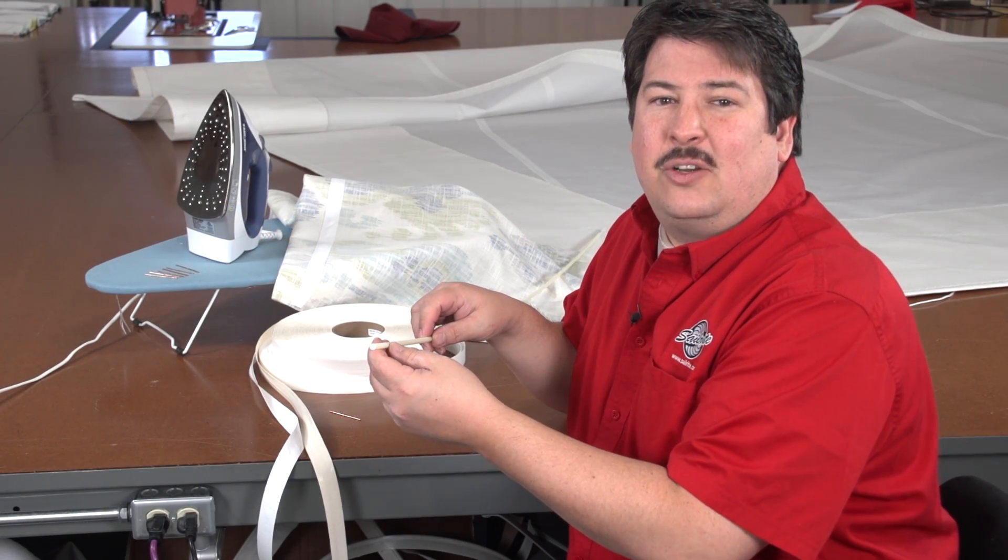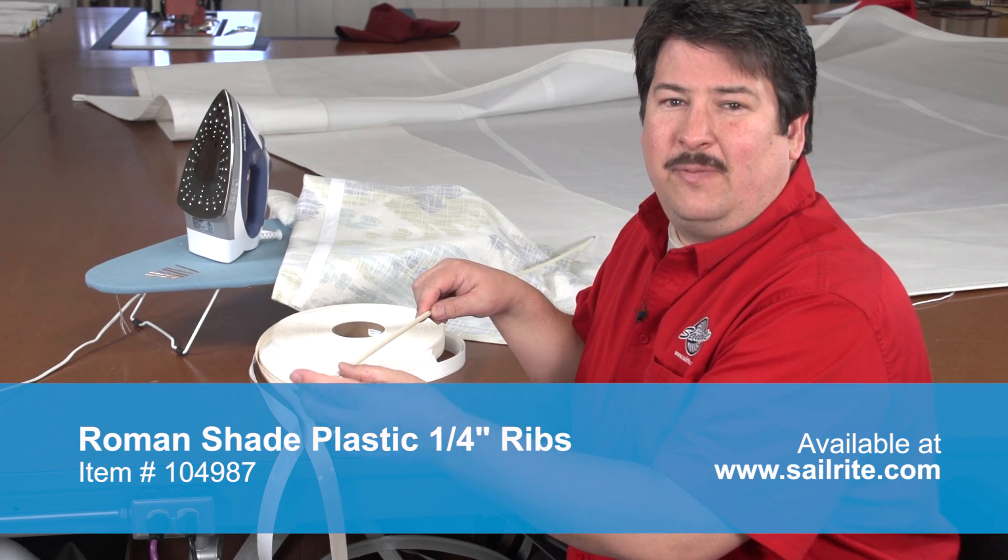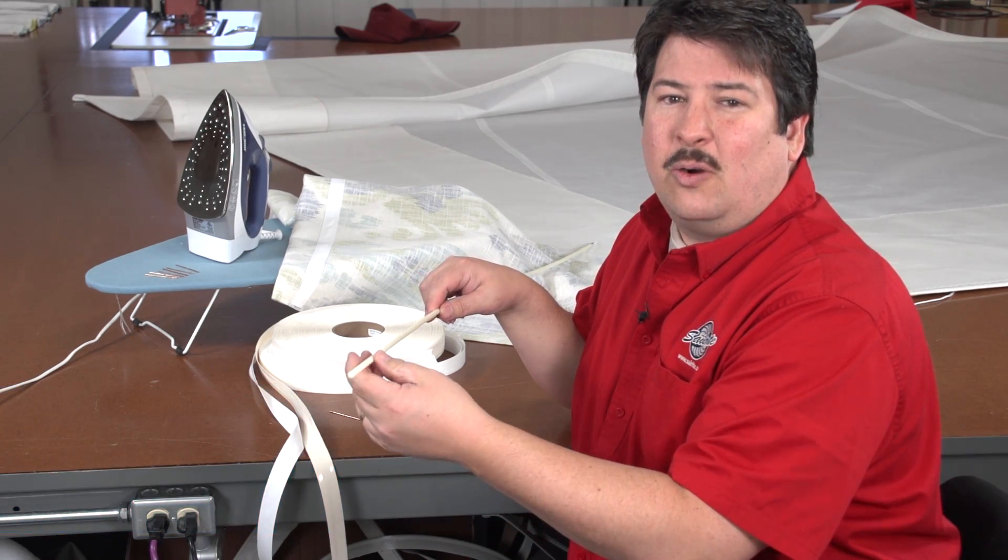Roman Shade Plastic Quarter-Inch Ribs are rigid plastic dowels that support the folds and pleats of Roman Shades or hobbled shades.